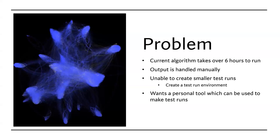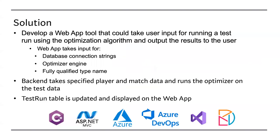The main task we were given was creating a personal tool for FargoRate which could be used to make smaller test runs. The solution we built was a web app that takes specific user input, runs it through an optimization algorithm, and gives the output data back to the user. At the very end, we have a test run table that is updated and displayed on the web app. And that would be our capstone project. Thank you.